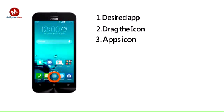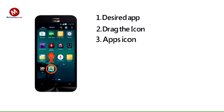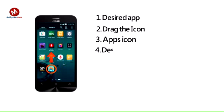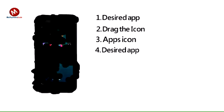Step 3: To remove an app from the device, from the home screen, tap the apps icon. Step 4: Touch and hold the desired app. Step 5: Drag the icon to uninstall. Note: some pre-installed applications cannot be uninstalled from the device, but can be disabled.